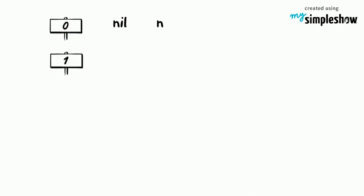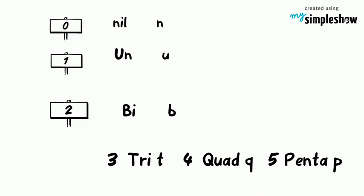The numerical roots used in systematic naming are: 0 = nil, 1 = un, 2 = bi, 3 = tri, 4 = quad, 5 = penta (p), 6 = hexa (h), 7 = septa (s), 8 = octa (o).